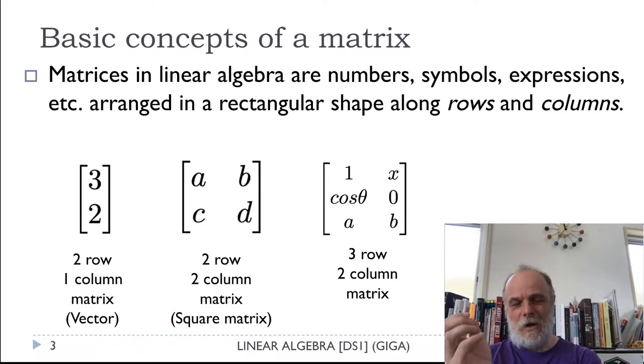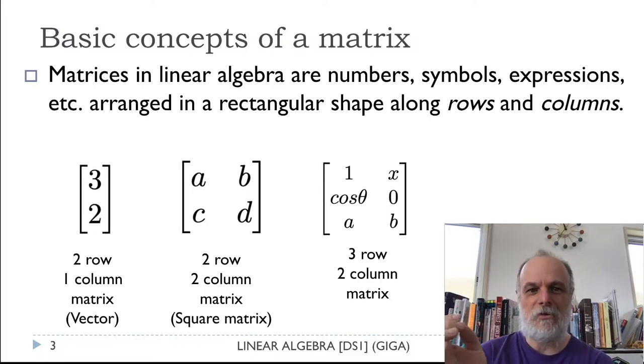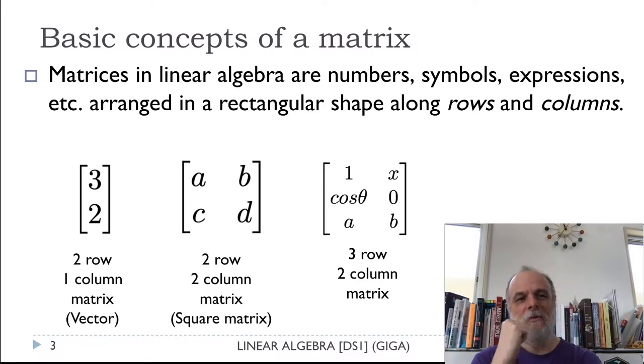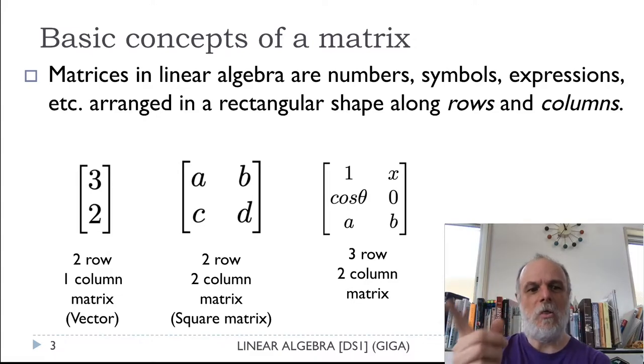The basic idea of a matrix: it's a rectangular array of numbers and symbols and expressions arranged into rows and columns. So you can see here on the screen, three examples. On the left, there is a two column, one row matrix, which is also one way to write a vector. In the middle, there is a two row and two column matrix, which is square.